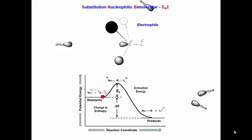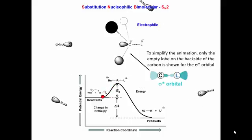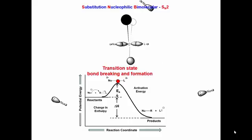There is an orbital at the backside of the carbon-leaving group sigma bond that will accept the electrons from the nucleophile, and as the bond forms, the alkyl groups are pushed backwards. At the same time, the carbon-leaving group sigma bond starts to break.